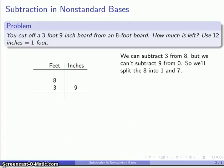But I also need to subtract 9 from 0, and I can't do that. So in order to prepare this subtraction, what I'm going to do is I'm going to split the 8 feet into a 1 and 7, and I'll trade the 1 foot for 12 inches.